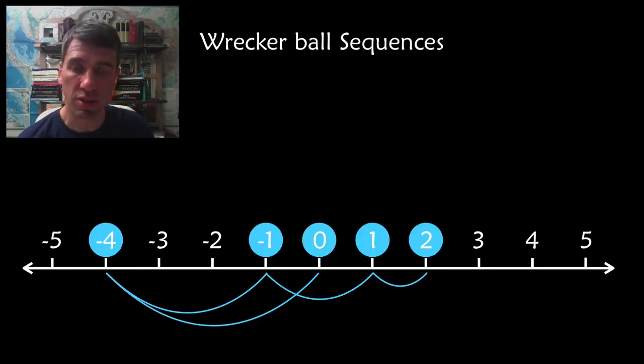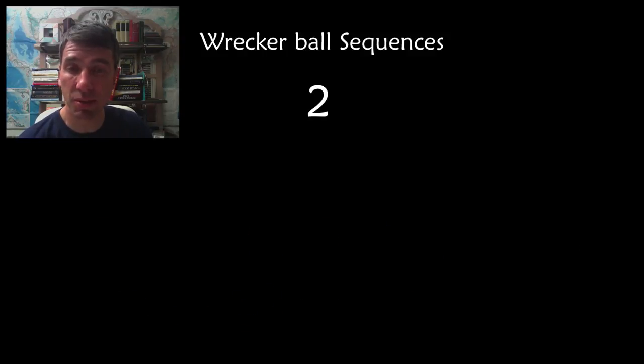So for two, it took us four steps to get to zero, which is the objective. Let's look at the same sequence. Again, starting from two. So we can add or subtract one, but we want to go in the direction of zero. So we subtract one, we get to one.